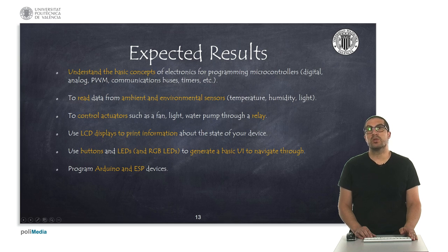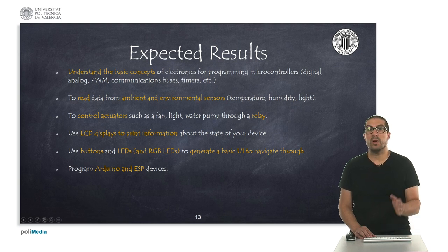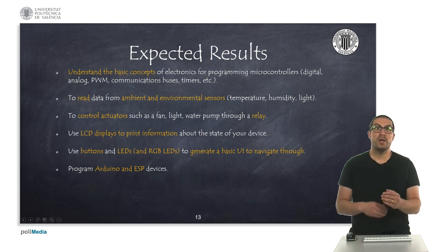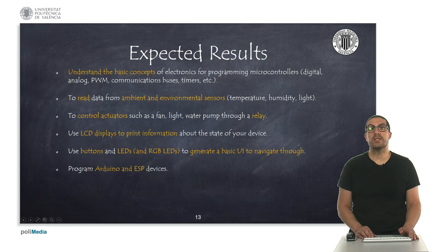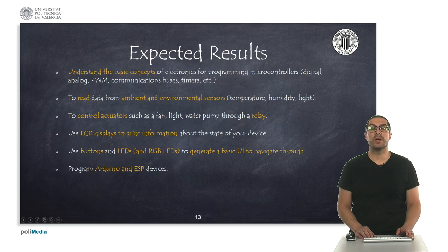At the end of this course, this is what we expect from you. We will explain some basic concepts on electronics and programming. You will be able to read data from environmental sensors such as temperature, humidity, and light. You will be able to control actuators such as a fan or a water pump using a relay. You will also be able to display information on an LCD display or use push buttons and LEDs to generate information to the user. The ultimate goal is that you will learn how to program Arduino and ESP devices in a very easy way. The second part of the course is full of contents to extend these basic results, and once you complete both parts you will be able to create intelligent devices connected over the internet or Bluetooth.